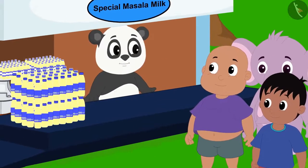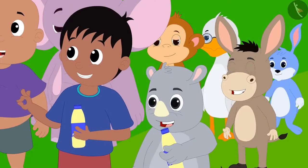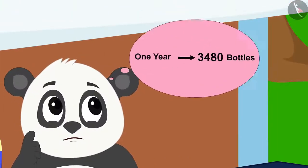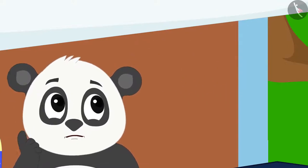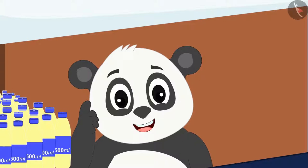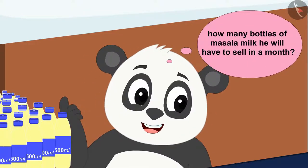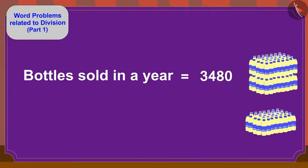Golu has started selling a special masala milk at his dairy. Everybody likes that masala milk very much. Golu has realized that if he sells 3480 bottles in a year, he will make very good profits. Now, Golu is trying to find out how many bottles of masala milk he will have to sell in a month. Children, can you help Golu?